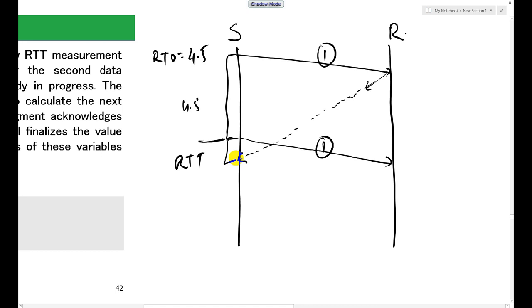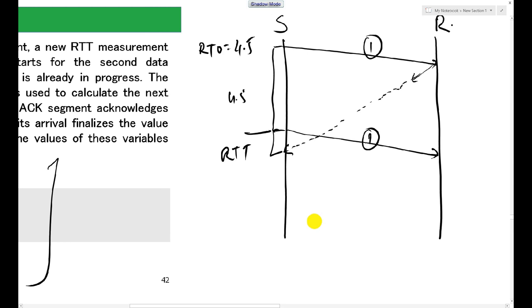We have a solution also and the solution is given by Karn and we call it Karn algorithm. What is proposed? Whenever there is a retransmission, we will not calculate the RTT calculation. But whenever you do retransmission, retransmission will be double of the previous RTO. That means it becomes 9 seconds now.